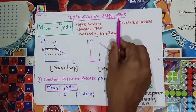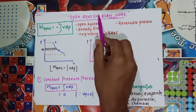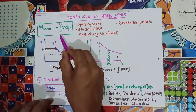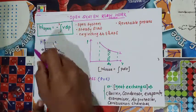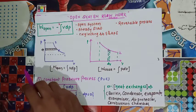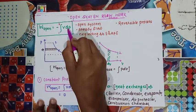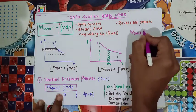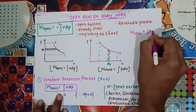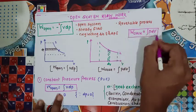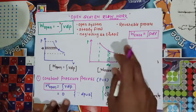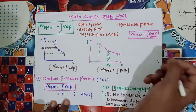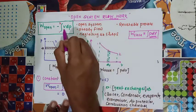The reversible work for an open system is given by the formula: integration of VdP. This is the formula for the reversible work in open system. While the closed work or displacement work formula is PdV. You must be very careful while applying the work formula — in closed system it is PdV, but in open system it is VdP.